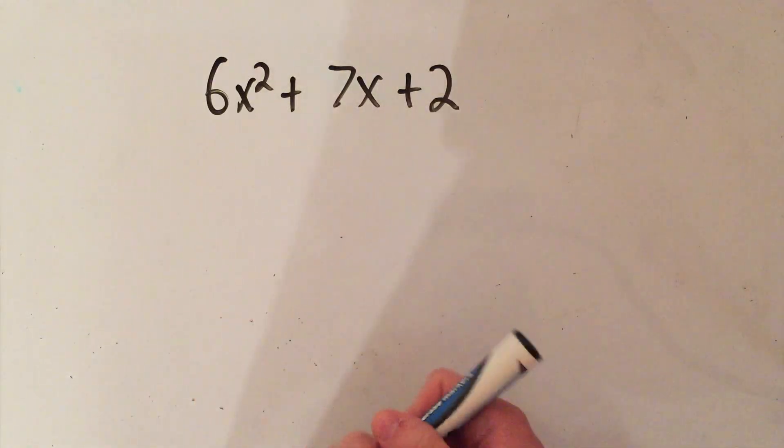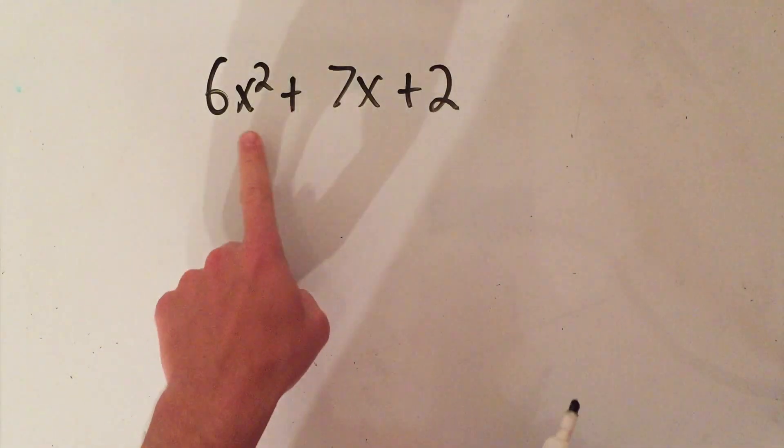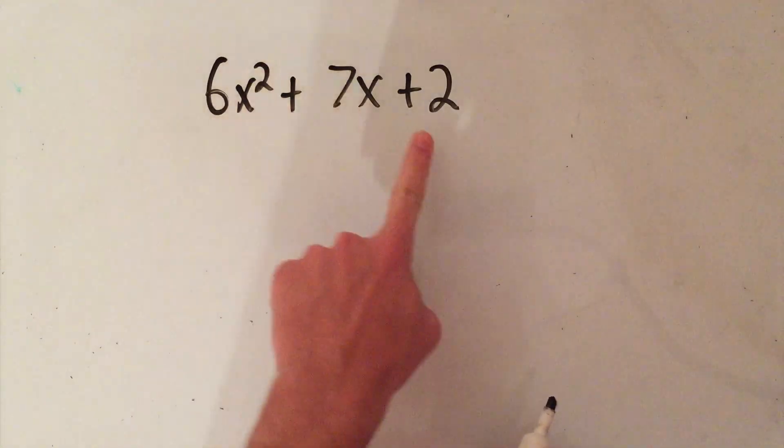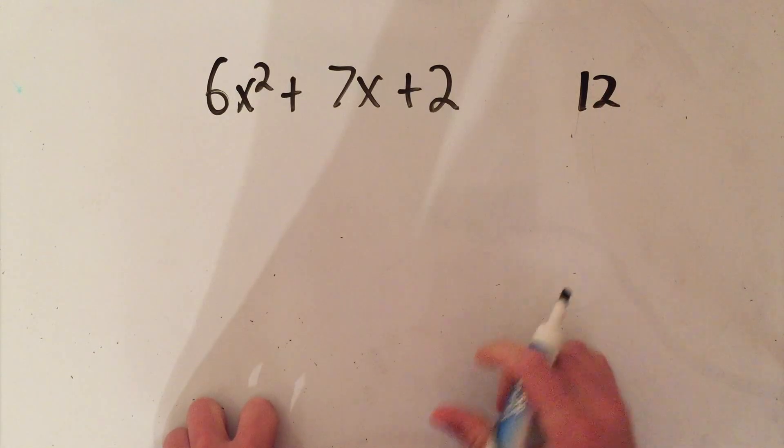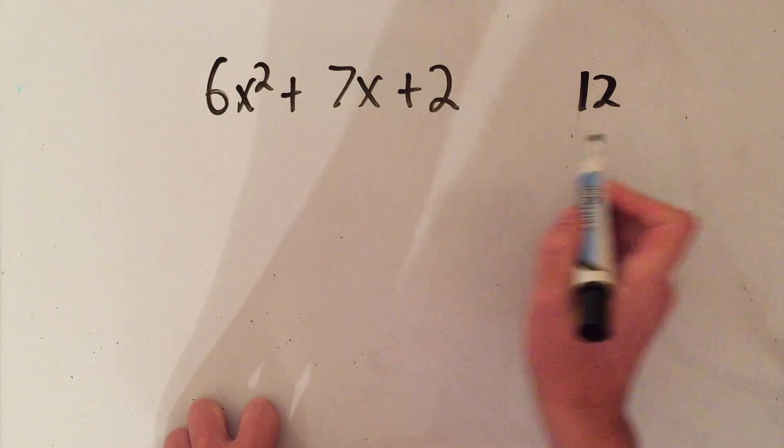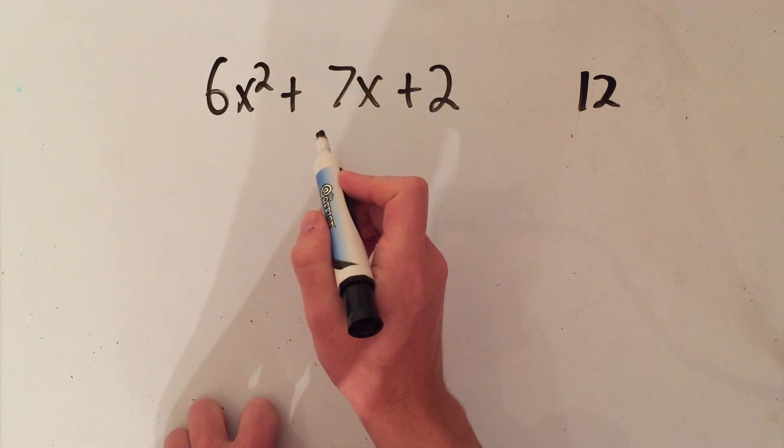Before, I would have done 6 times 2 is 12, and then I would have looked for factors of 12 that add to 7.